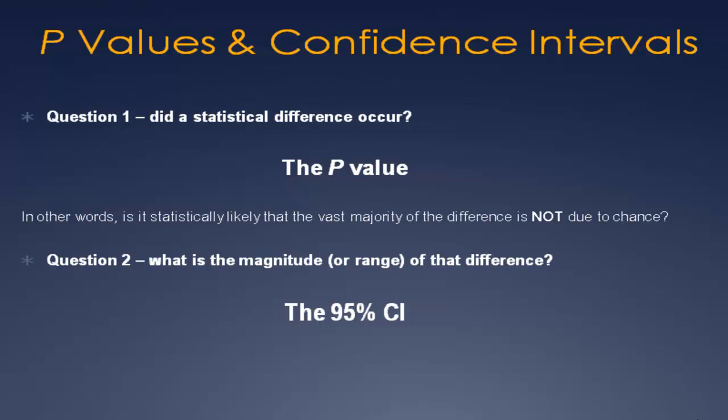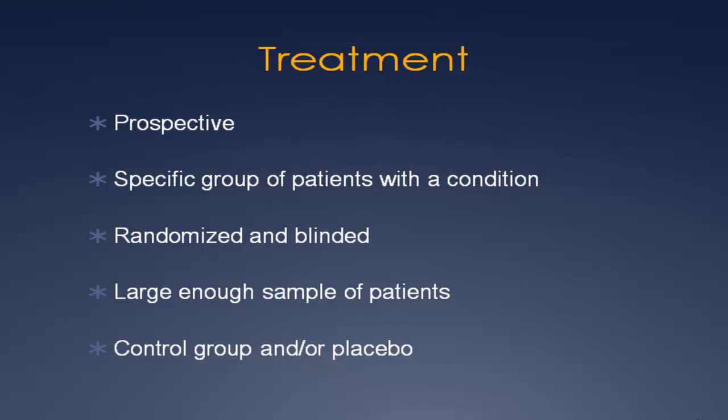When considering a study or treatment, it should have certain properties, including being a prospective study — hopefully randomized — where patients and treating doctors are blind to which treatment the patient receives. With manipulation, this is impossible, so at the very least the individuals collecting data should be blinded. There should also be a large enough sample; in general, no less than 50 in each treatment and control group. It would be best to compare to a no-treatment group to determine how much natural history contributes to improvement.